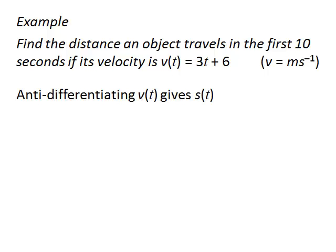Anti-differentiating velocity gives distance. So we anti-differentiate 3t plus 6. And that means we take the t and add an extra power. It becomes t squared. And we take that 2 and divide it under the 3. It becomes 1.5. The 6 gains a t. And because we are anti-differentiating we get the constant of integration.